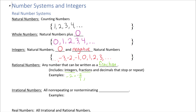Rational numbers also include any decimals that stop. For example, 1.25 can be written as the fraction five-fourths. I'm not expecting you to write them as fractions — I just need you to know that any decimal that stops can be written as a fraction.